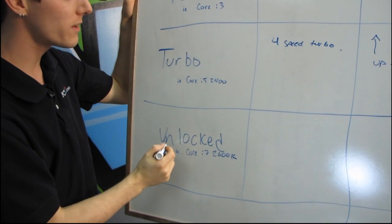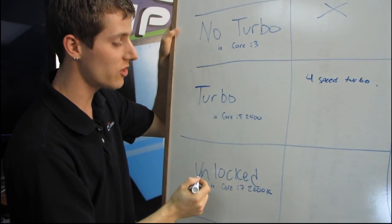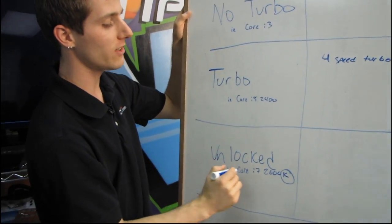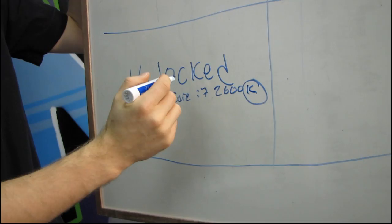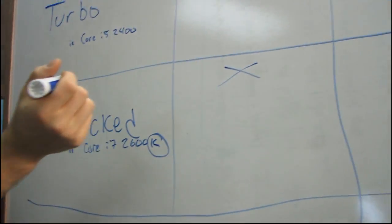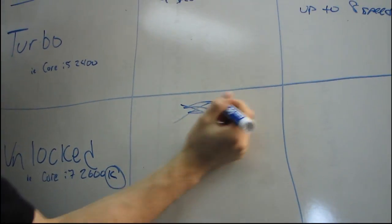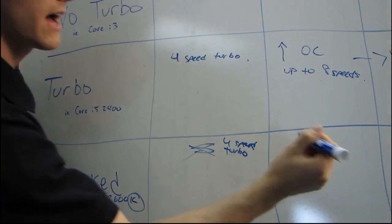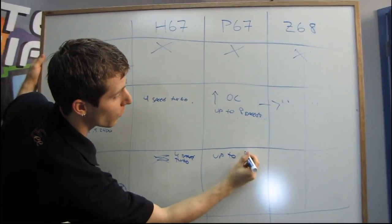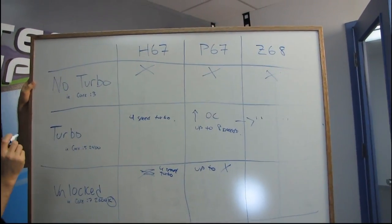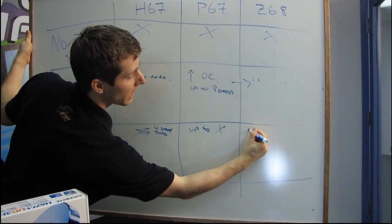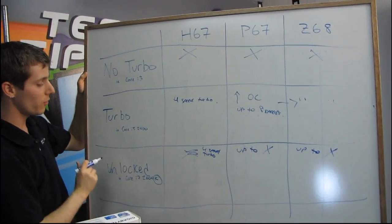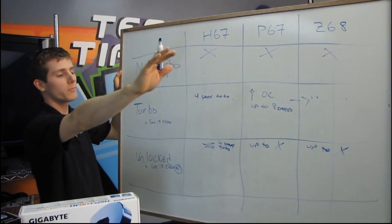Unlocked processors have turbo because all the unlocked chips are already reasonably high-end chips, and they also have a suffix K. The example we're using is the Core i7-2600K. You have support for the four-speed regular turbo, plus you have completely up to whatever you want in terms of overclocking on P67, and up to whatever you want on Z68, which isn't out yet. So these you can overclock as much as you could possibly want, until the chip reaches its limit.